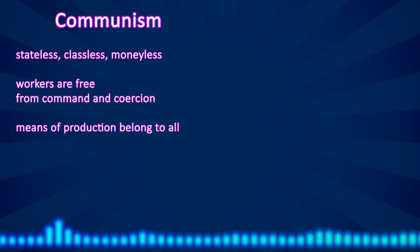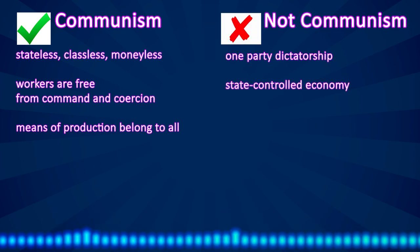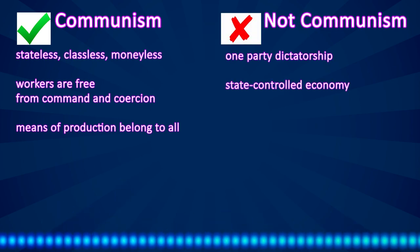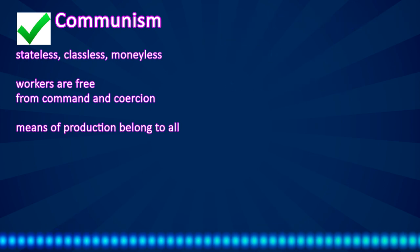There are different types of communists, and these different types disagree about how to create communism. But communists agree on the final goal: a stateless, classless, moneyless society, where workers are free from command and coercion and the means of production belong to everyone. This is the true definition of communism. The other definition — which defines communism as dictatorship and a state-run economy — is based on the false assumption that if a country is governed by a communist party, it must have a communist system. But communists agree that these countries are not communist and never were.